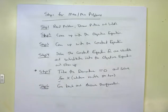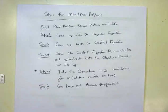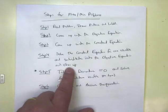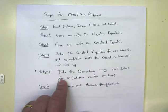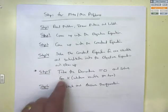Step three: come up with the constraint equations. Constraint equations are the equations with the given information. Step four: solve the constraint equation for one of the variables and substitute it into the objective equation, then clean it up. Therefore, you've got your objective equation in terms of one variable.